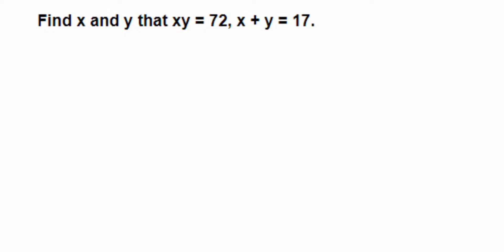Here is an important and interesting question: find x and y such that xy is equal to 72 and x plus y is 17. So they have given xy = 72 and x + y = 17, and we need to find the values of x and y.